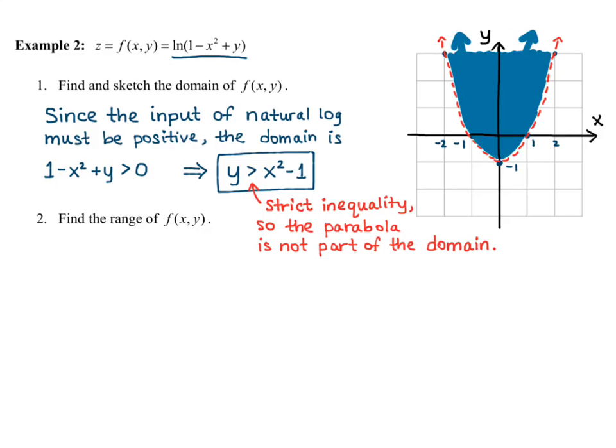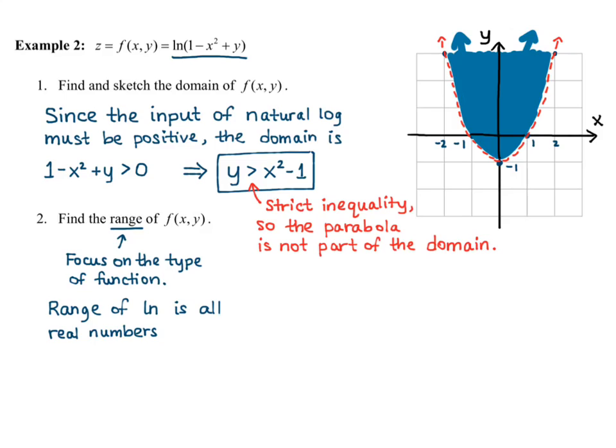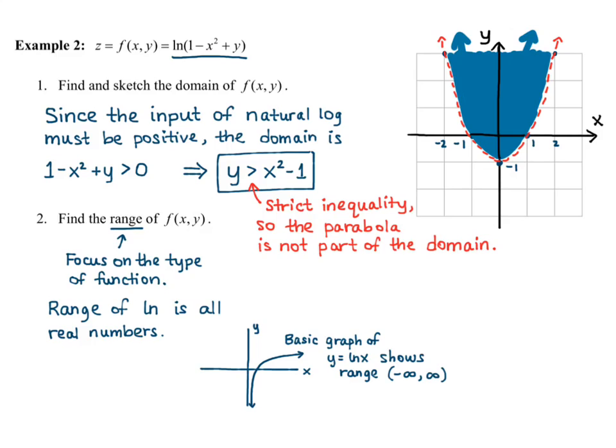For the range, we need to focus on the type of function — we have a natural log function. The range of natural log is all real numbers; it hits every possible positive, negative, and zero value. I know this from the basic graph of y equals natural log of x from pre-calculus: the domain doesn't go below zero, but the range goes all the way down and all the way up. So the range is negative infinity to infinity. You really just need to know your graphs from pre-calculus to determine domains and ranges.